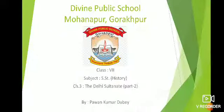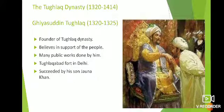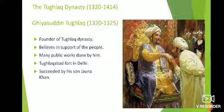Good morning. Today we are going to start Class 7 History, Chapter 3: The Delhi Sultanate, Part 2. In the previous video I explained two dynasties that ruled the Delhi Sultanate — the Mamluk or Slave dynasty and the Khalji dynasty. In this video I will explain the remaining dynasties that ruled the Delhi Sultanate.